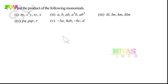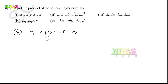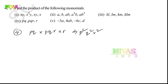Fourth one: PQ into PQR into R. P appears twice: P into P is P squared. Q appears twice: Q into Q is Q squared. R appears twice: R into R is R squared. So the answer is P²Q²R².